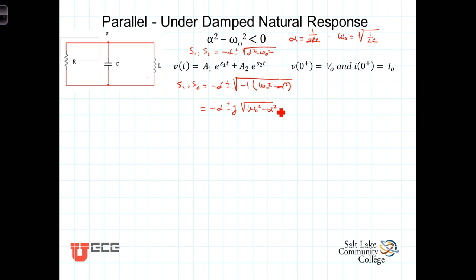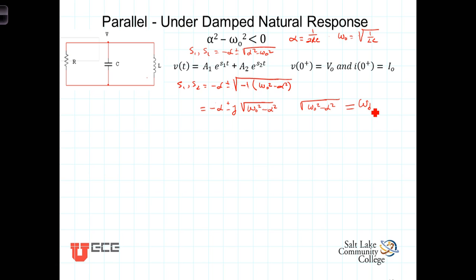Let's take this radical term, the square root of omega naught squared minus alpha squared, and define a new parameter called omega sub D, or the damped frequency. We're going to see in just a minute that the underdamped case results in an oscillation, and the frequency of oscillation is omega sub D. With that substitution, S1 and S2 are equal to negative alpha plus or minus j times omega sub D.